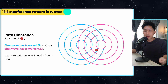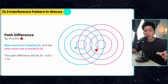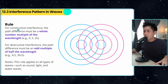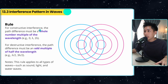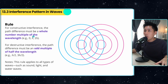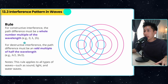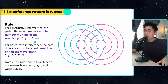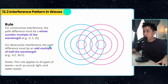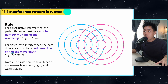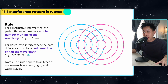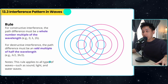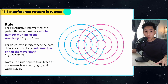We use the concept of path difference to determine whether constructive or destructive interference has occurred. For constructive interference, the path difference must be a whole number multiple of wavelengths — like 0, lambda, 2 lambda. Whereas for destructive interference, the path difference must be an odd multiple of half the wavelength — half lambda, 1.5 lambda. This applies to all wave types: sound, light, and water waves.